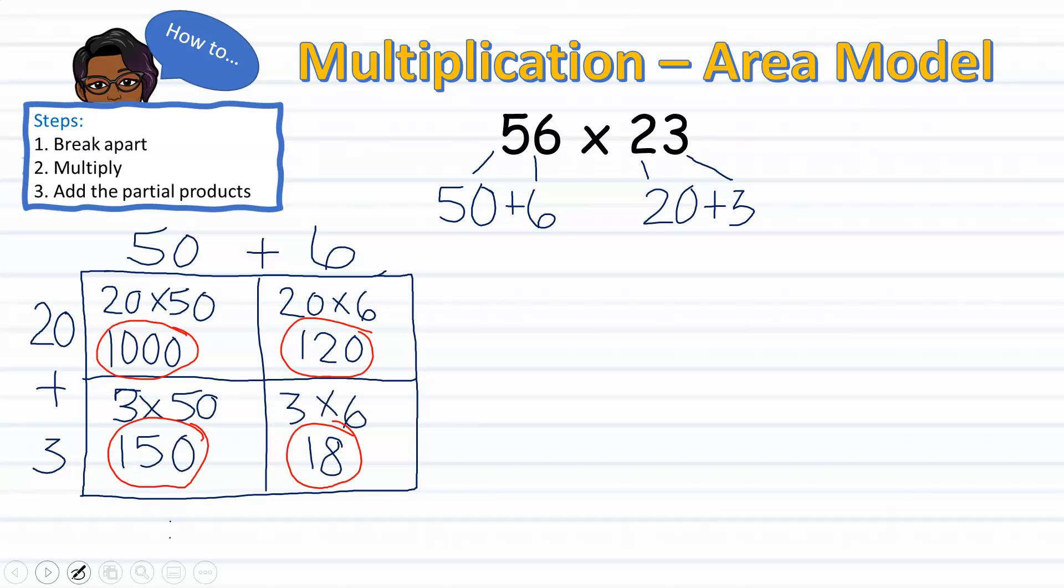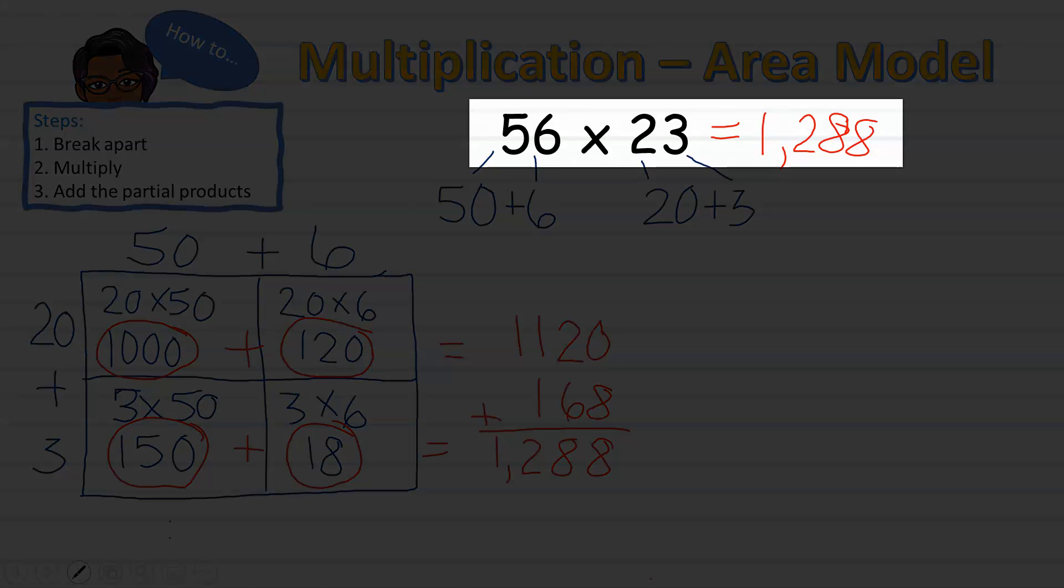Once you're done multiplying, you take all of the partial products, as we see circled here, and add them up. When adding, the results will be the same whether the students add going down or across. After adding the partial products, I end up with 1,288. Therefore, I know that 56 times 23 equals 1,288.